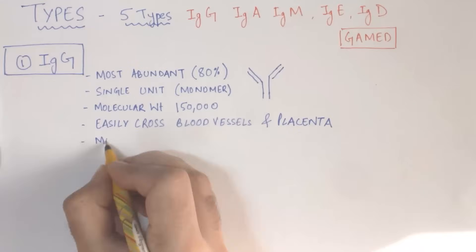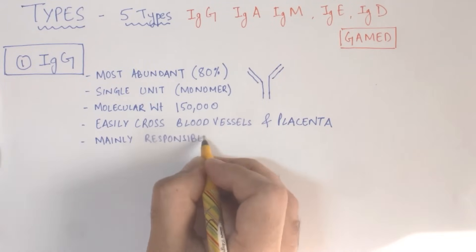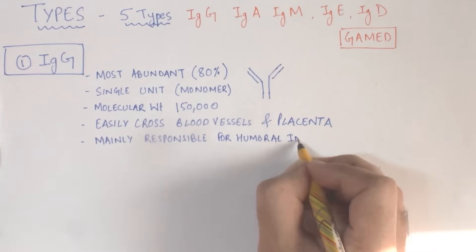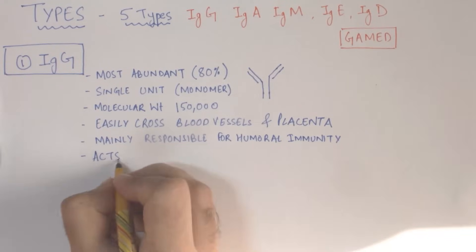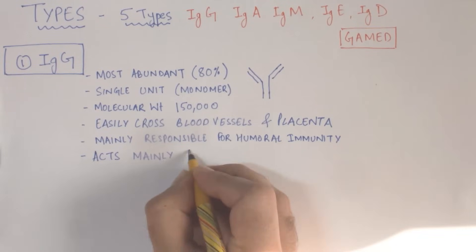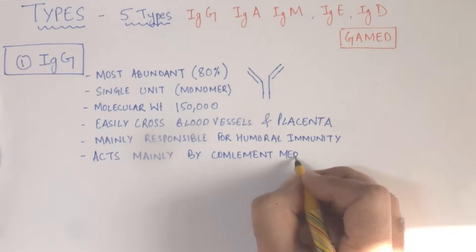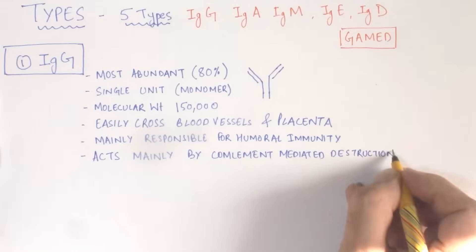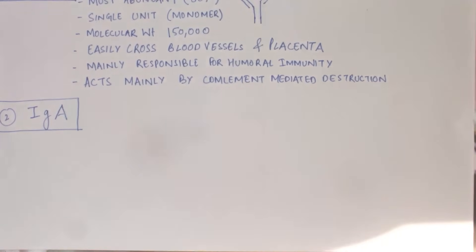Since IgG is a small antibody, it can easily cross the blood vessels and the placenta. Immunoglobulin G is the antibody mainly responsible for humoral immunity, and its main mechanism of action is complement-mediated destruction of foreign cells.